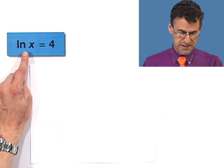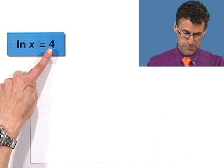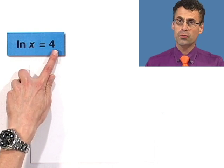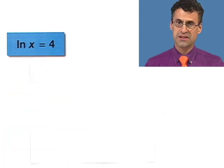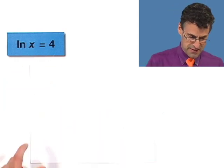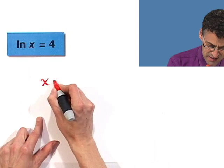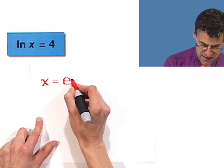Well, this is log base e of x equals 4. Log is an exponent. So 4 is the exponent I have to raise the base e to in order to get x. So literally, if I translate that, this says x equals e to the fourth.